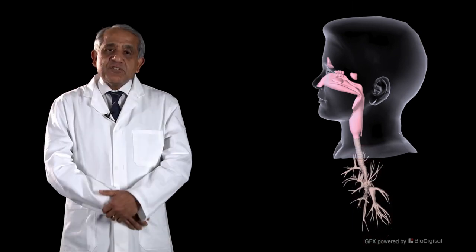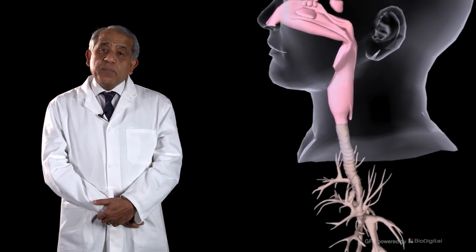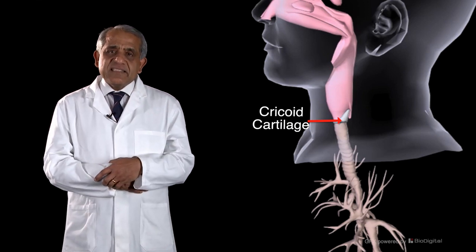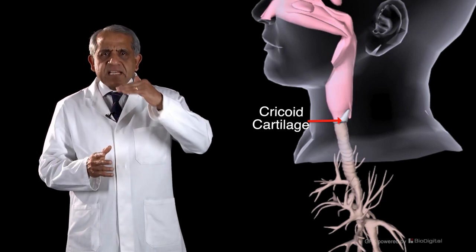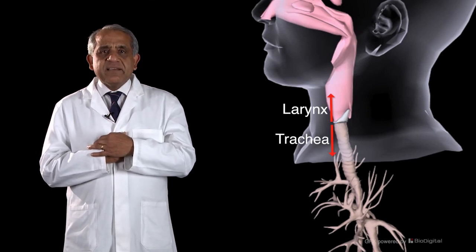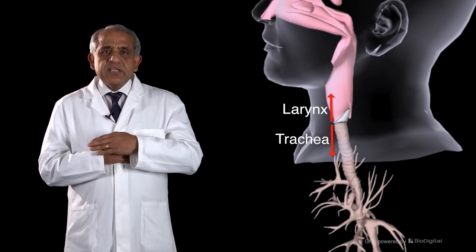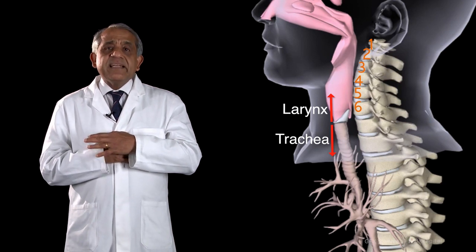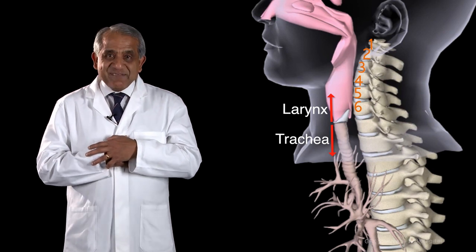Let's consider the tracheobronchial tree. The trachea commences at the lower border of the cricoid cartilage as the direct continuation of the larynx. The cricoid is part of the laryngeal skeletal framework, and precisely at the lower border of the cricoid cartilage, the larynx changes its name to the trachea. That level corresponds to the sixth cervical vertebral body in an individual whose neck is neither exaggeratedly extended nor exaggeratedly flexed.